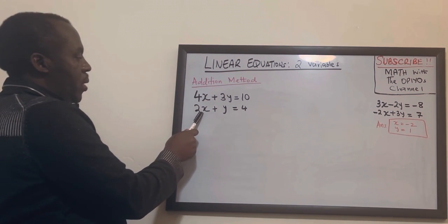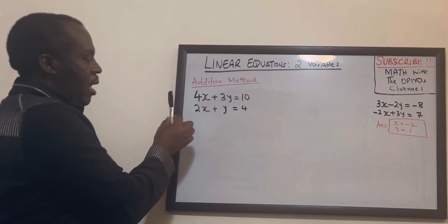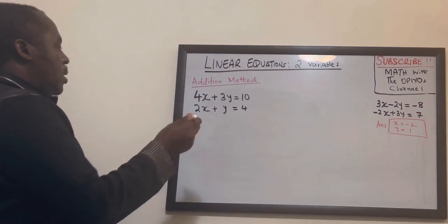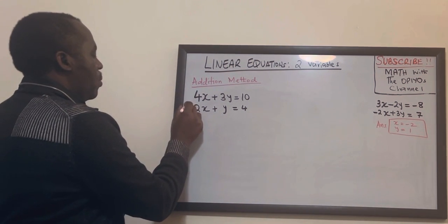So to make this 2x to be the same as 4x I multiply this by 2. So if I multiply this whole equation by 2